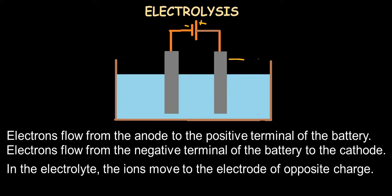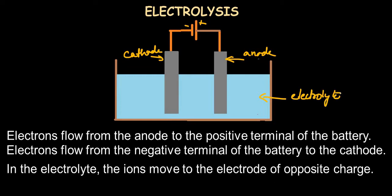In that case, this electrode is the anode and the other electrode is the cathode. Electrons flow from the anode to the positive terminal of the battery, so the flow of electrons in the external circuit is from positive to negative.